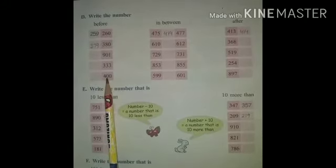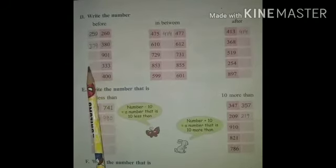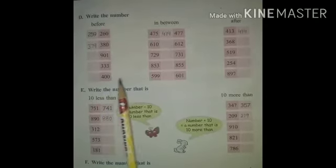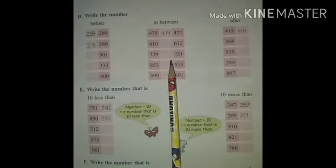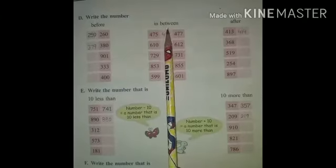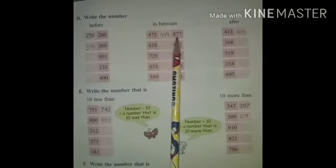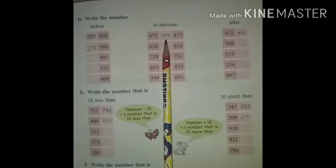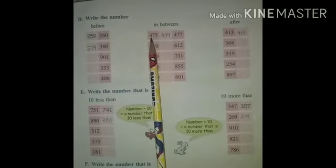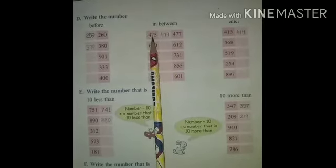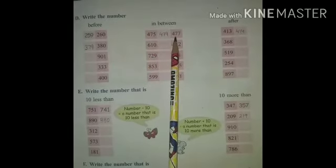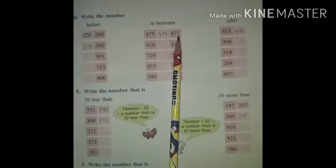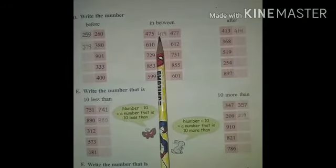Okay, same as it is — these questions are given and you have to write the before number. Okay. In Between — between means in the middle. We have to write the number that comes between two numbers. First question: 475 and 477 — what number comes between 475 and 477?